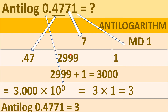Under the anti-log tables, you will find that the number is 2999. Note down that number. After that, under mean difference, under column 1 — why 1? Because after 477 the next digit is 1. Under the column 1 in mean difference, the number is 1. So you add that 1 to 2999: 2999 plus 1 equals 3000.